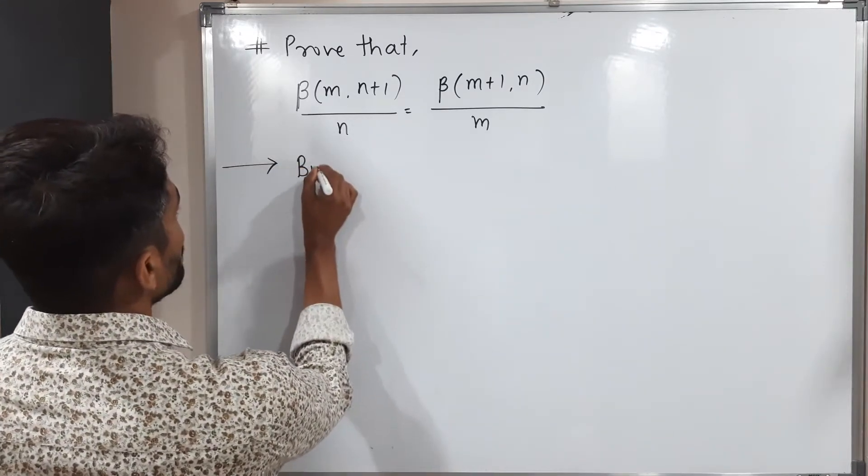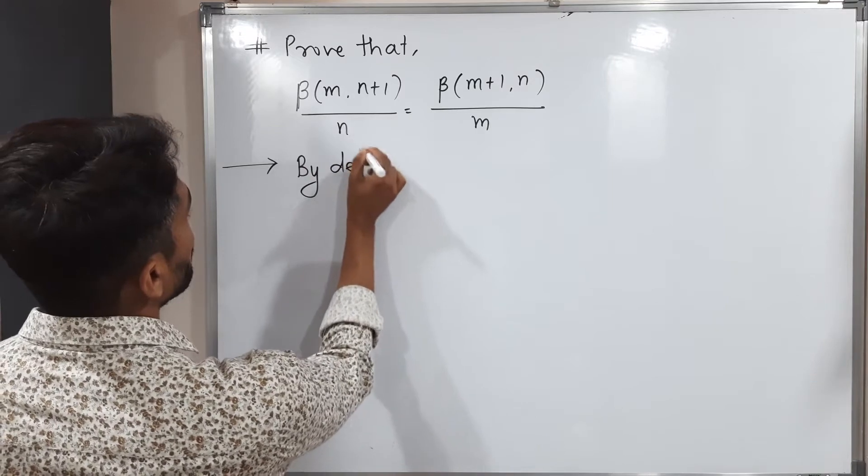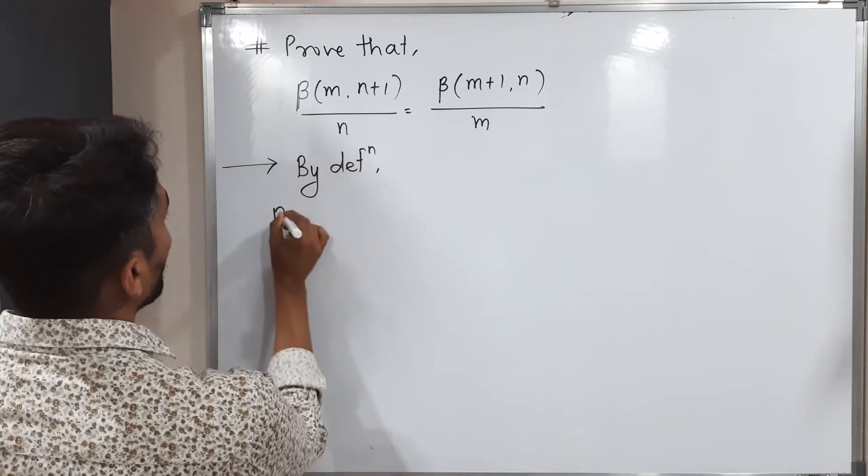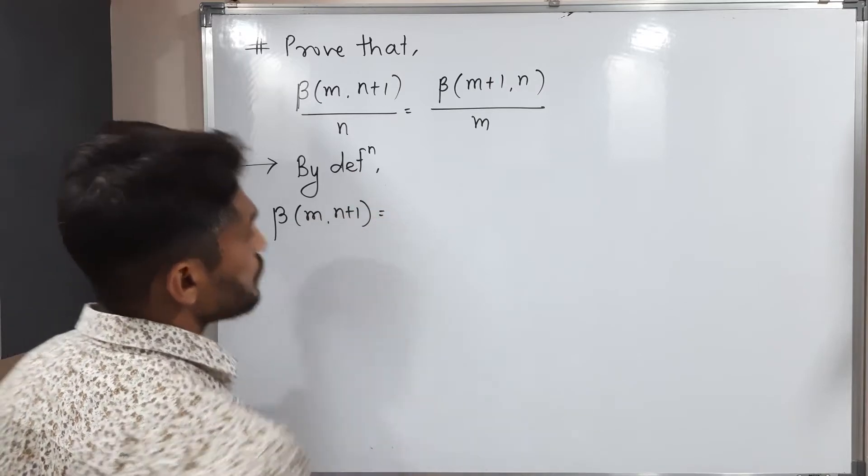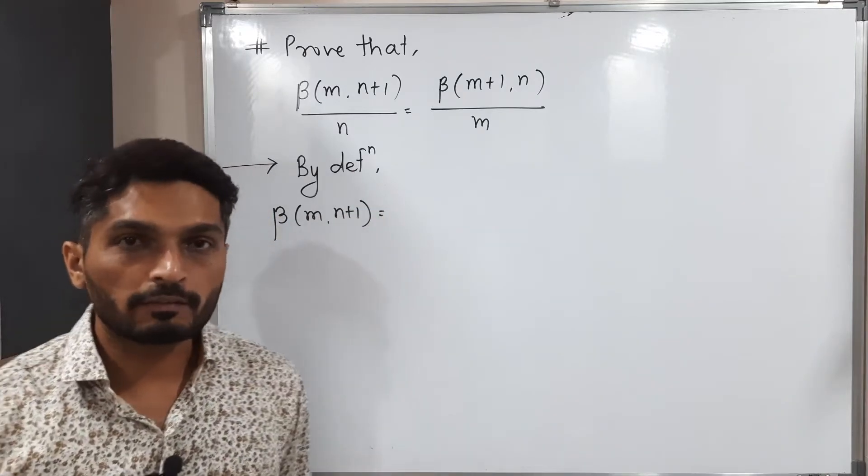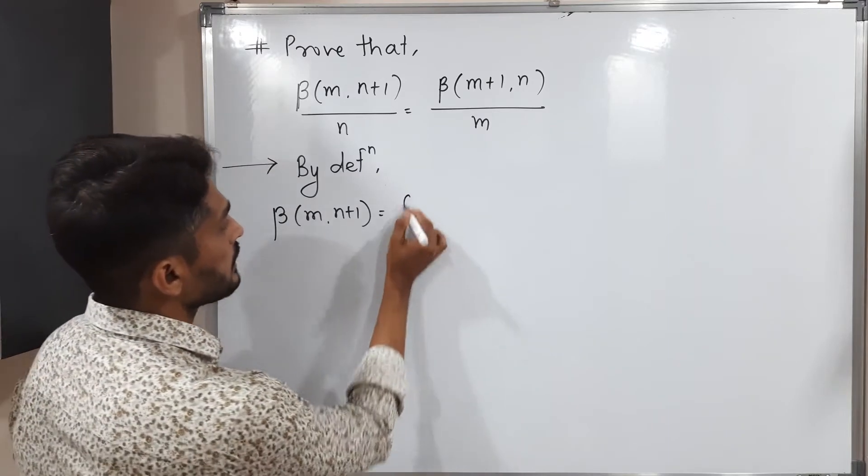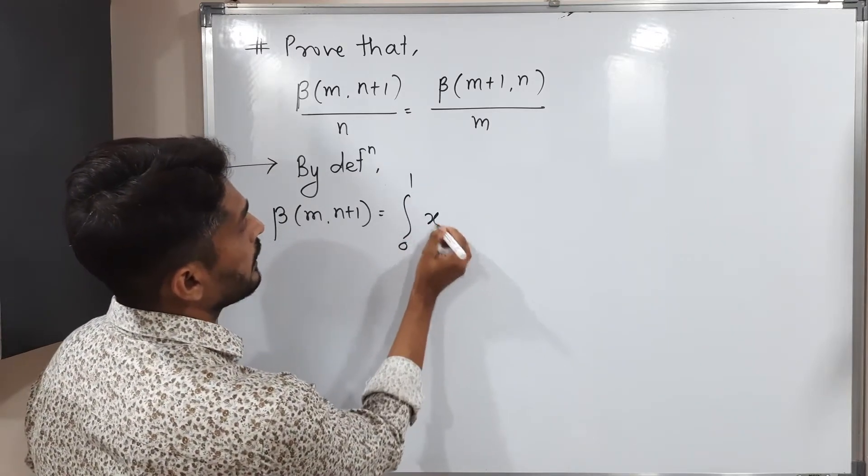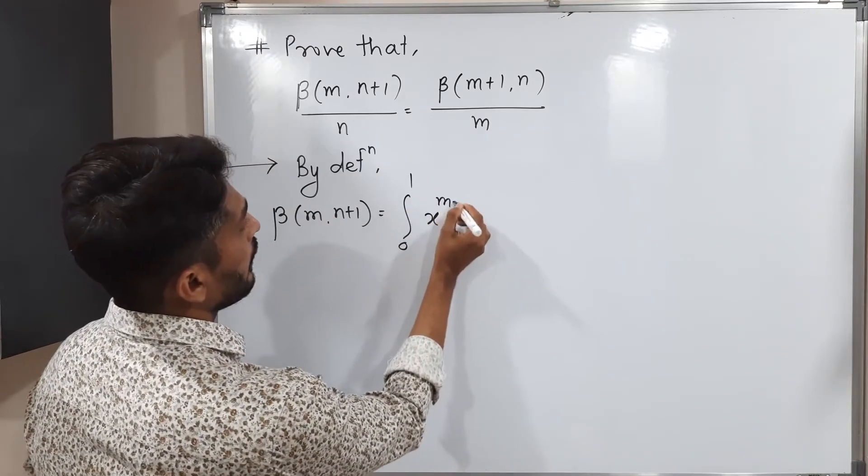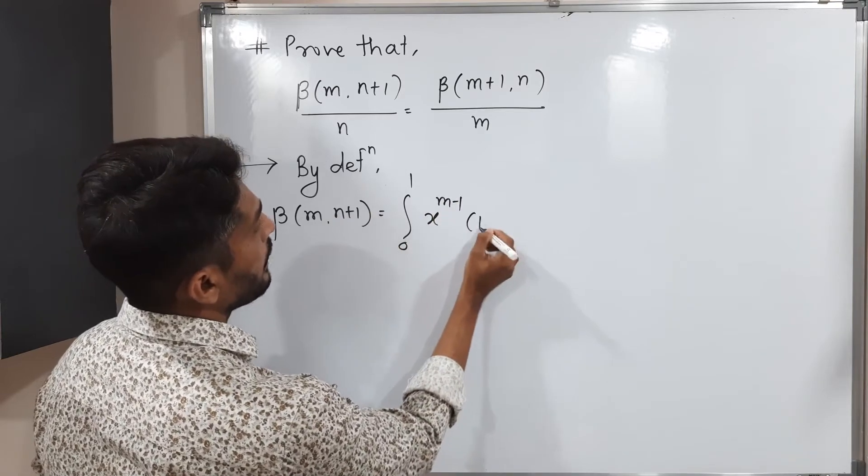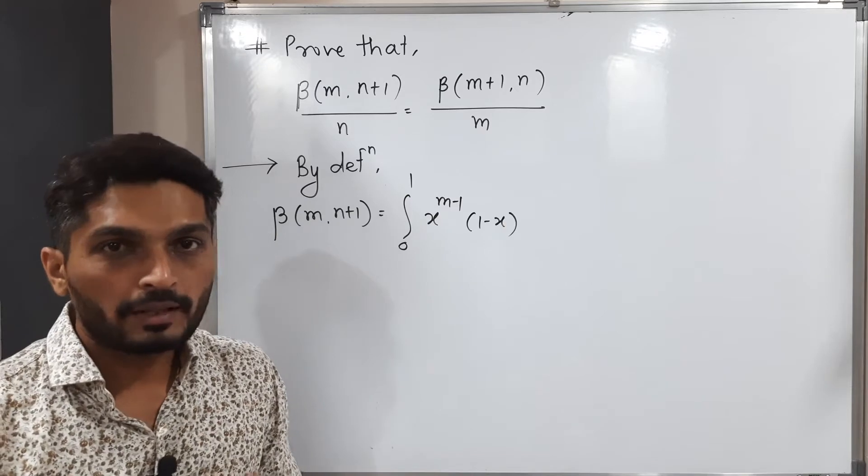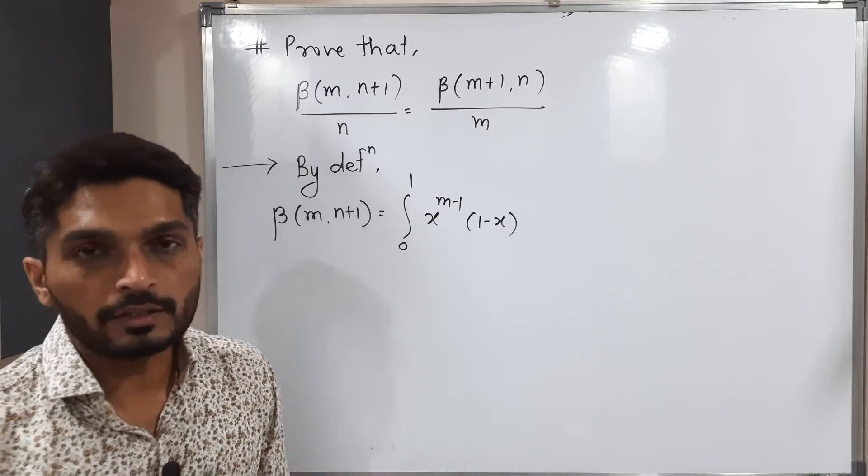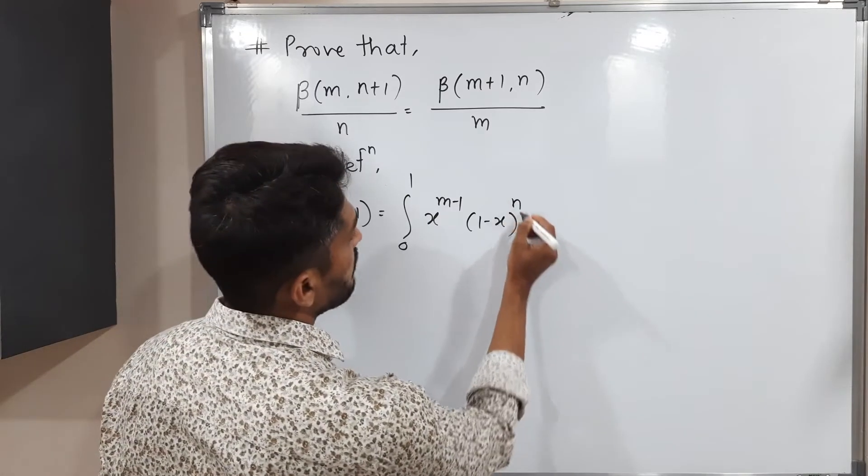So I'm going to use the definition here. I will write by definition beta of m, n plus 1. So we are familiar with the definition of beta function. Let us use the definition here. The definition says integration 0 to 1, x raised to m minus 1, and 1 minus x raised to, we will subtract 1 from it. n plus 1 plus 1 is already there, so minus 1 plus 1 cancel, we'll have n dx.